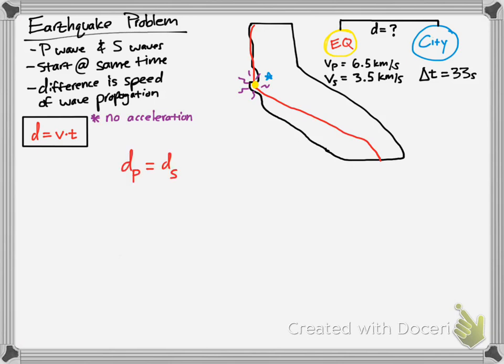We're trying to find the distance. Both waves travel the same distance. So if we set the two equations equal to each other using v × t, we just set that up and plug in the information that we know.